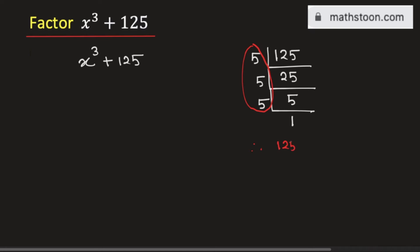That is, 125 can be written as 5 to the power 3. Using this fact, we can write the given expression as x cube plus 5 cube.